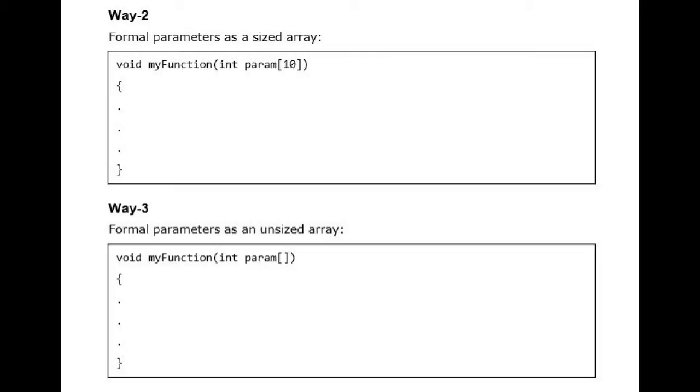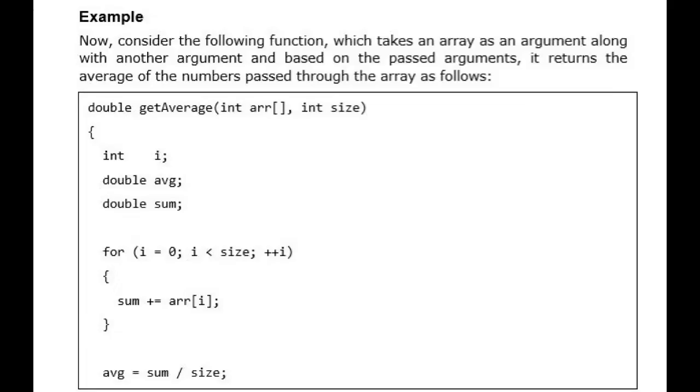for (i = 0; i < size; ++i) { sum += arr[i]; } avg = sum / size; return avg; }